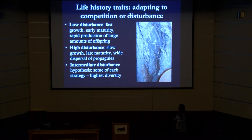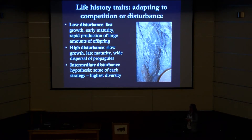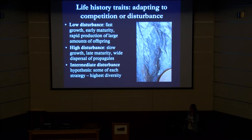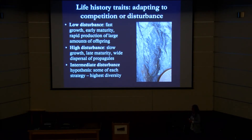Where competition is important, beneficial life history traits include things like fast growth, early maturation, and rapid production of large amounts of offspring. Conversely, when there's high disturbance, you tend to grow slower, reach maturity later, and disperse your propagules widely to try to find an ideal site to grow.